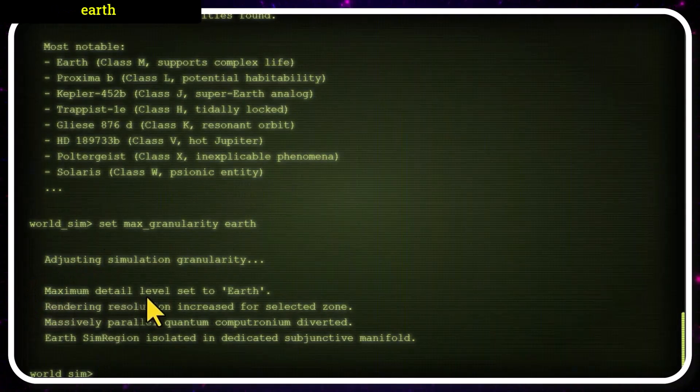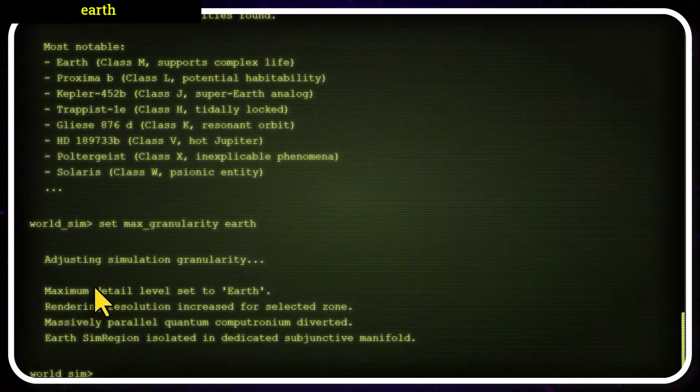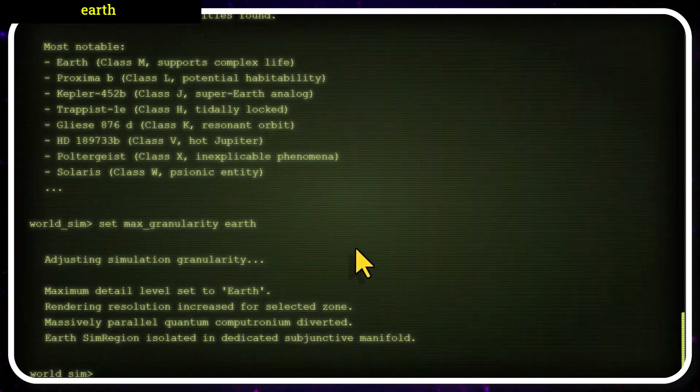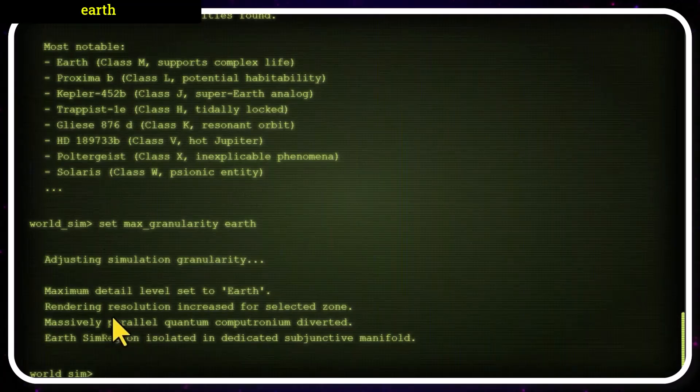In this simulation, the maximum level detail is set for Earth. That's the one that we're going to be focusing on. And Earth's sim region is isolated in a dedicated subjunctive manifold. That means we can observe what's happening on Earth with much more detail, with much more resolution than the rest of the universe. It's going to take some more compute power for that, but that's okay.